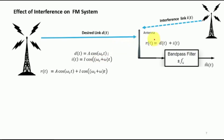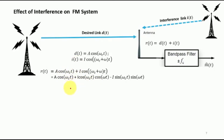The received signal will be a combination of d(t) and i(t) as expressed. In the second equality we expand cos(α + β), which is equivalent to cos α·cos β − sin α·sin β.